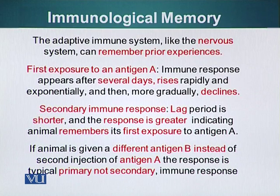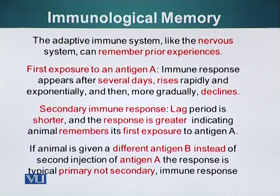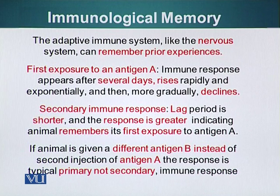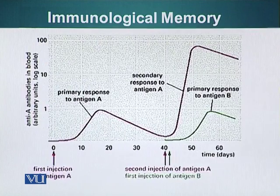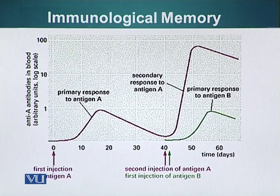If an animal is given two different antigens — antigen A and antigen B — at the same time, the response to antigen B is the typical primary response and not the secondary response, showing that the experimental animal specifically remembers its first encounter with antigen A. Since antigen B was encountered for the first time, there was no secondary immune response.